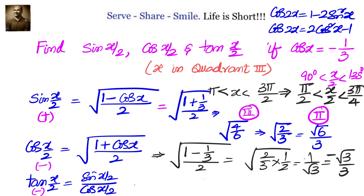For tan(x/2), which is also negative, we compute sin(x/2) divided by cos(x/2): (√6/3) divided by (-√3/3), which equals -√2.